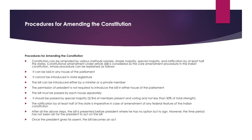The procedure under Article 368 can be explained as follows. The bill can be introduced in any house of the parliament; it cannot be introduced in state legislature. The bill can be introduced either by a minister or a private member. The permission of the president is not required to introduce the bill in either house. The bill must be passed by each house separately by a special majority — that is, two-thirds of members present and voting and not less than 50% of total strength.